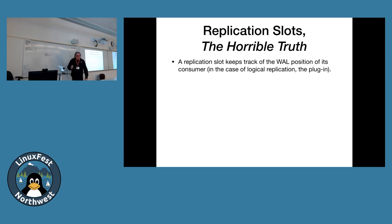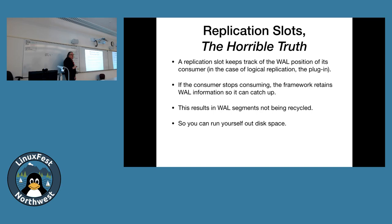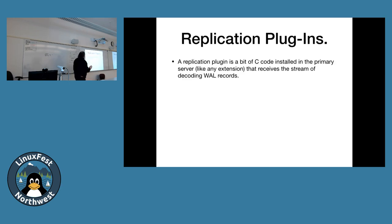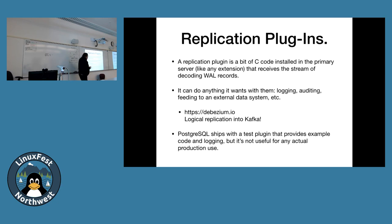If the consumer stops consuming, the framework retains all the WAL information so it can catch up — creating a new way to run out of disk space. Monitor your disk space closely if you create a replication slot. The plugin is a bit of C code like a Postgres extension that receives the logically-decoded records and can do anything with them: logging, auditing, feeding to a streaming system, replicating into Kafka, and so on. Postgres ships with a test plugin that provides example code, but you don't really use it for production.